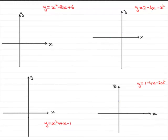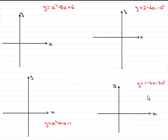Welcome to this tutorial on sketching quadratic graphs. I'm going to take these four equations of graphs and show you how we can sketch the graphs, locate maximum and minimum points, and the equation of the line of symmetry, just by completing the square. I'm going to divide this into two parts. In the first part I'll concentrate on sketching these two equations, and in the second part these two — where we've got a minus x squared term, and in one case a minus 2x squared term.